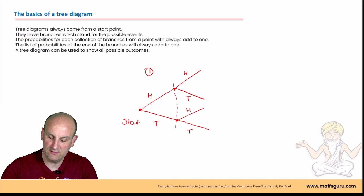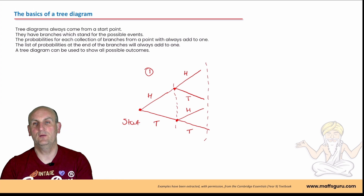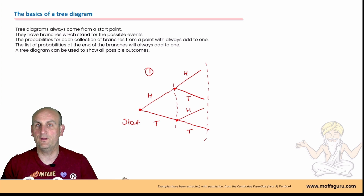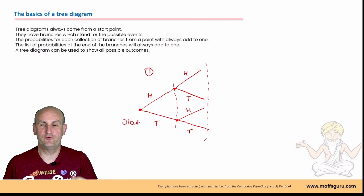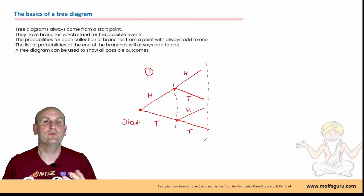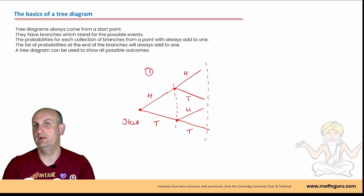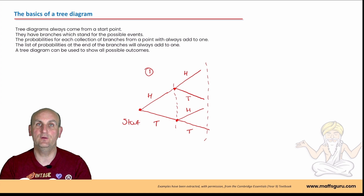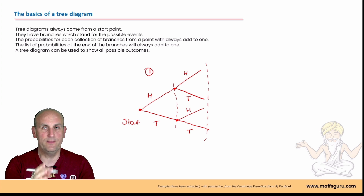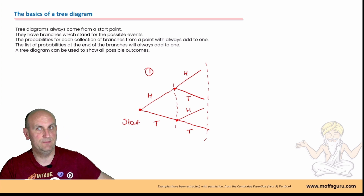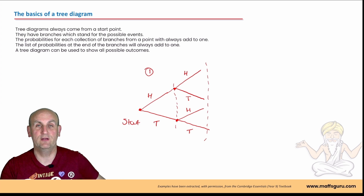I've now drawn my tree diagram. But what if I threw it a third time? Do you see a potential problem? We're going to run out of space. Trying to draw these things well can become really hard if you go from front to back. But if I were to draw it back to front, I'd never run out of space. More on that in a moment.